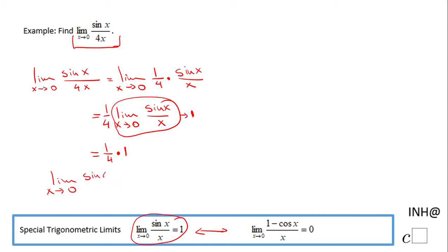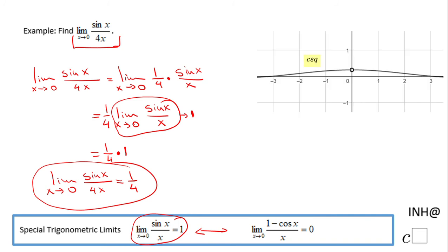So the limit when x approaches 0 of sine of x over 4x is 1 over 4. We can take a look at the graph. This is the graph of sine of x over 4x, and you notice we have a hole here.